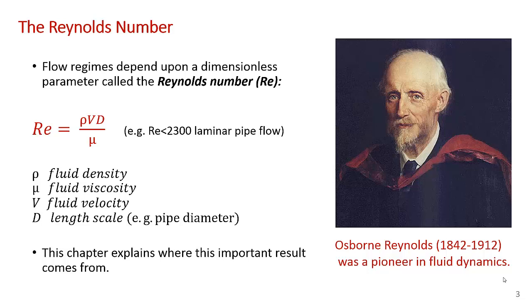You learned that when the Reynolds number is less than about 2300 you get laminar flow, and above that you tend to get turbulent flow where the velocities in the pipe are random and you get a lot of mixing. It doesn't matter what the specific velocity, diameter, density, or viscosity is—it's the ratio of those parameters that determine the flow regime. In this chapter we'll explain where this important result comes from.